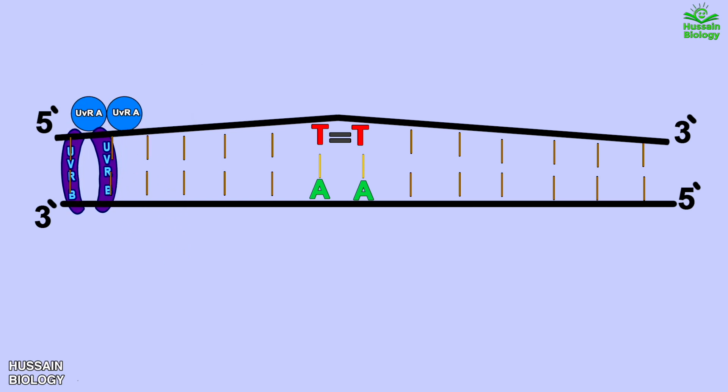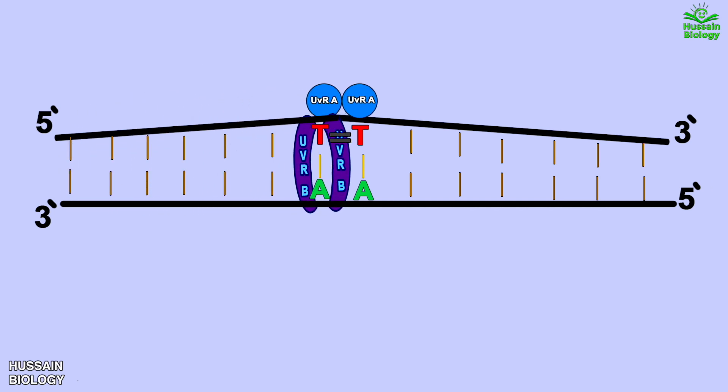After that the UVR B clamps with the DNA and starts moving on the DNA and finds the damage or distortion. When this UVR A-UVR B complex finds the damage or distortion the UVR A dimer leaves.